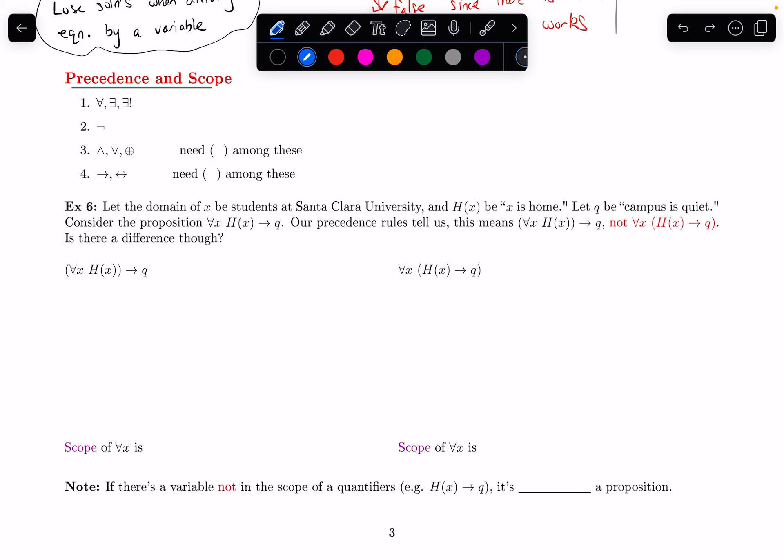Now that we have quantifiers in the mix, like for all and there exists, they will take priority, first priority. So let's do an example where we discuss this.